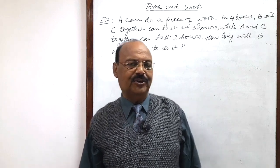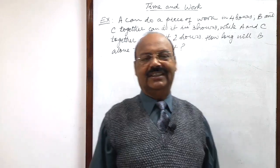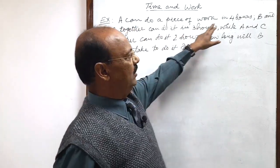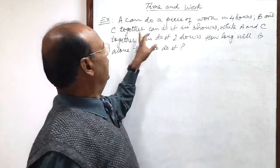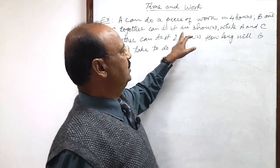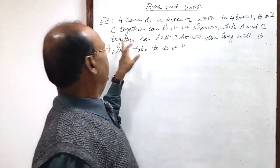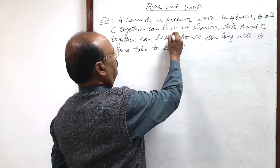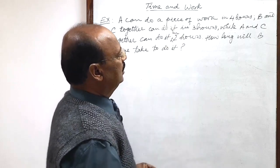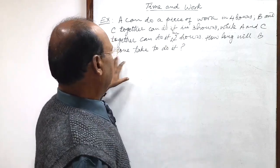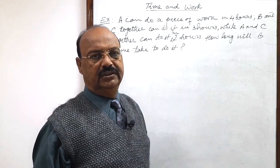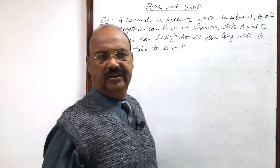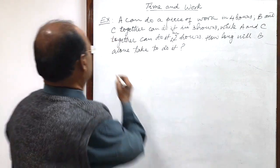Welcome students. Let us see a very important question from the topic time and work. The question is: A can do a piece of work in 4 hours, B and C together can do it in 3 hours, while A and C together can do it in 2 hours. How long will B alone take to do it? Let us see the solution.